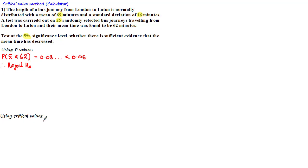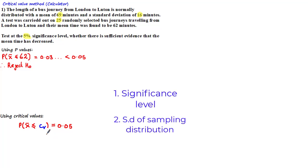Using critical values, and given the fact that this was a lower-tailed test, we need to find the critical value CV that satisfies the probability that all observed values less than or equal to our critical value is exactly equal to 0.05. For this method, we need three values: the significance level, the standard deviation of the sampling distribution, and the population mean.